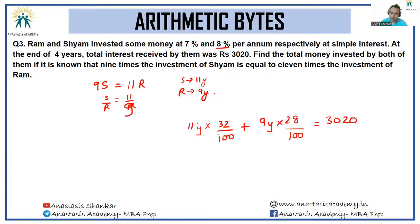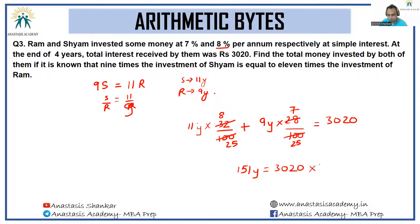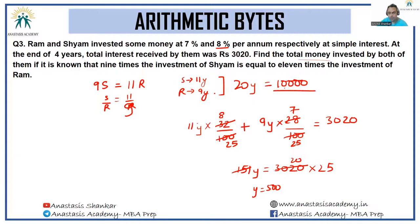Simplifying: 88y/25 plus 63y/25 equals 3020, giving 151y/25 = 3020. So y equals 500. The total money invested is 20y, which is 20 into 500, giving 10,000 rupees as the total investment.